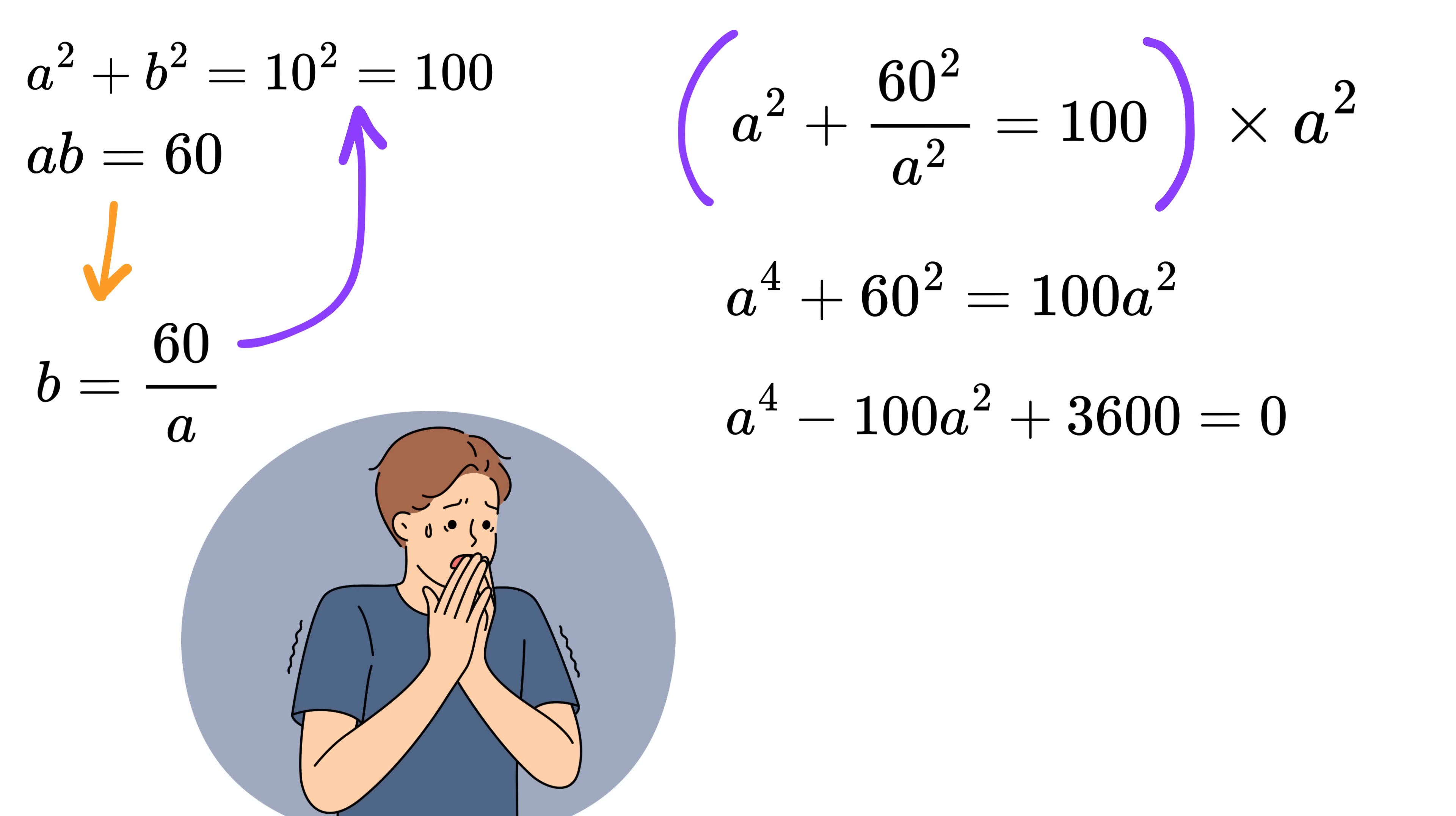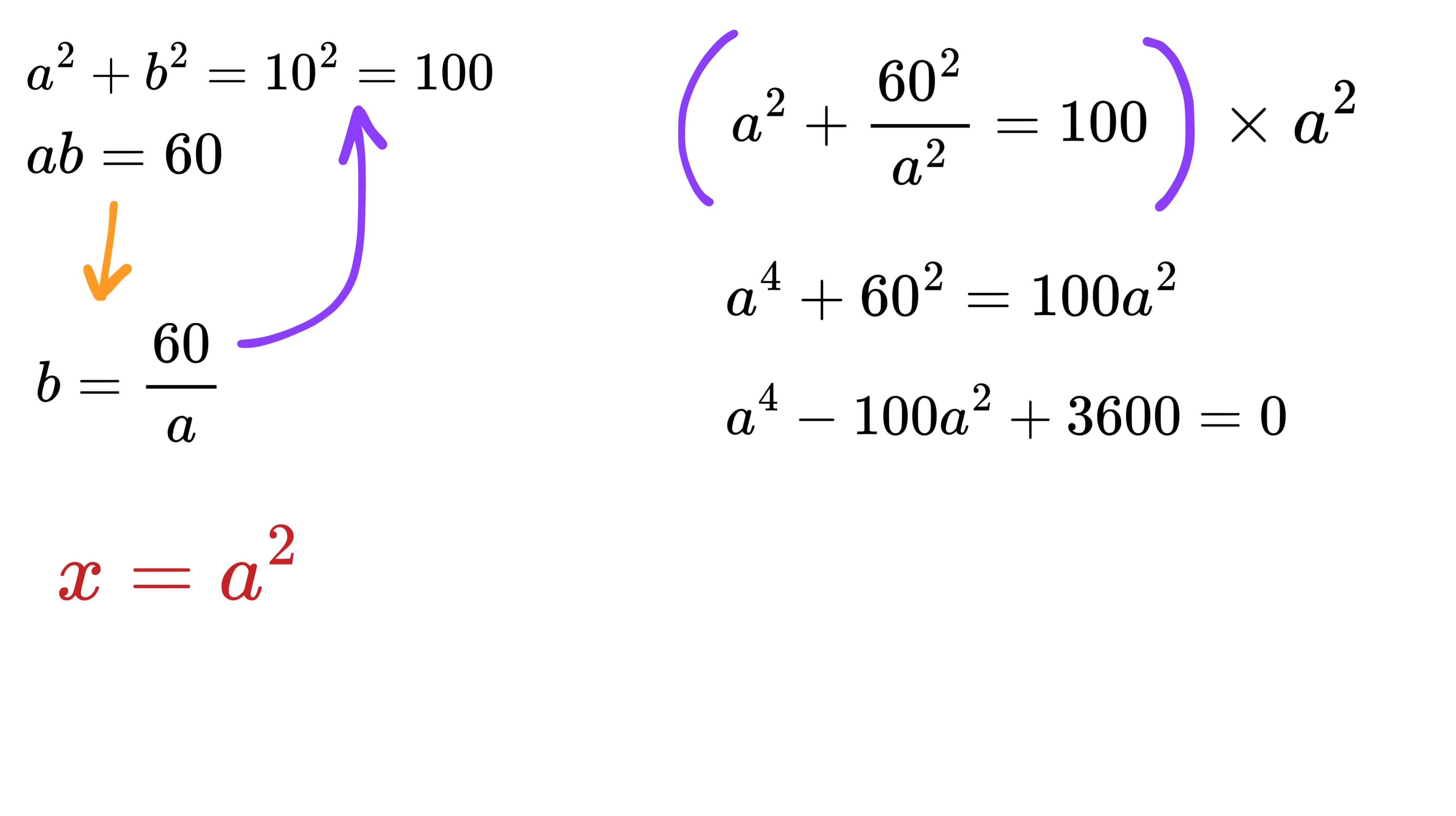This is just a quadratic in A square. Let X be A square. So the equation now becomes X square minus 100 X plus 3600 equals 0. On solving this quadratic equation, we get X as this and this.